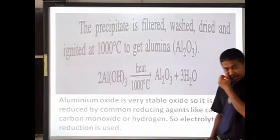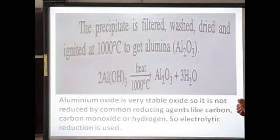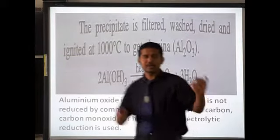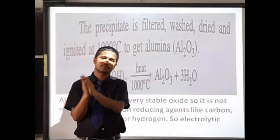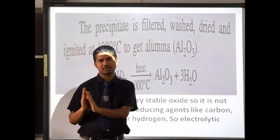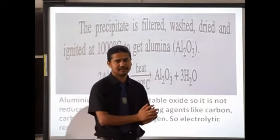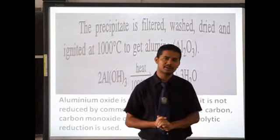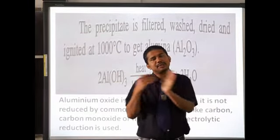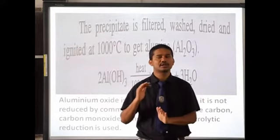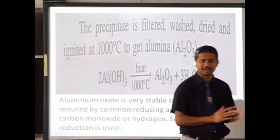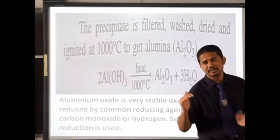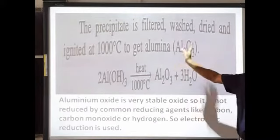We now have aluminium oxide (also called alumina). Step three for all extraction of metal is oxidation of ore, which can be done by roasting or calcination. However, since aluminium is already in the form of oxide, there is no need for step three in extraction of aluminium. This is how we get aluminium oxide from bauxite.